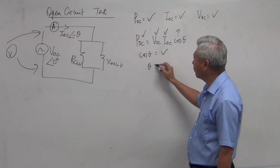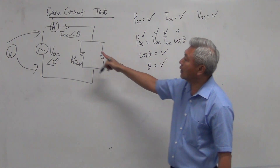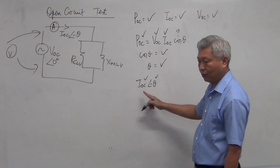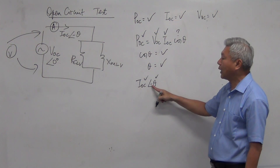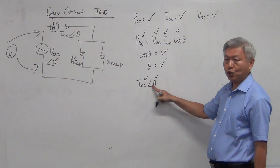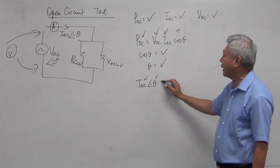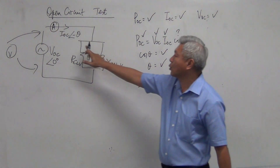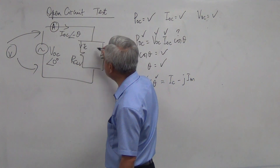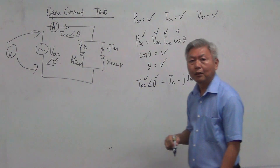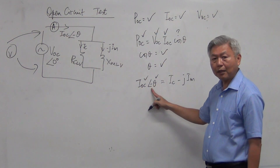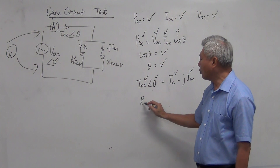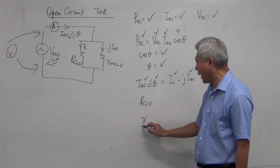Once cosine theta is found, take the inverse to get theta. Substitute this theta into the current with a negative sign: IOC at minus theta. This is in polar form. Convert it into rectangular form — you get two numbers. These two numbers are the two current components: IC (the real part) and minus j·IM (the imaginary part).